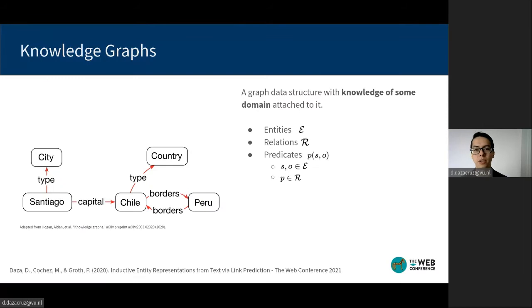In this work we're concerned with knowledge graphs, which we define as a data structure containing a set of entities, a set of relations, and a set of binary predicates that indicate the existence of a relationship between two entities.